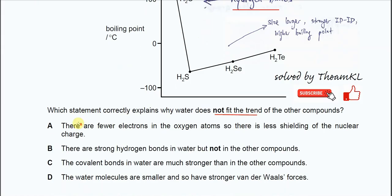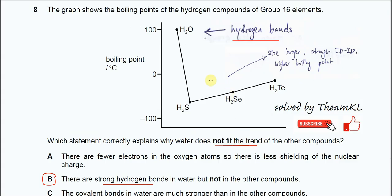So we need to find the best answer. Of course it's B. There are strong hydrogen bonds in water but not in the others. Why? Because the hydrogen is covalently bonded to oxygen, which is highly electronegative. So therefore this molecule is more polar than the others and eventually it can form hydrogen bonds. That's why the boiling point is higher.